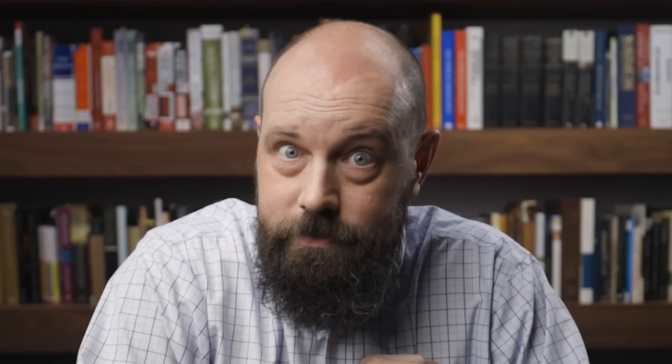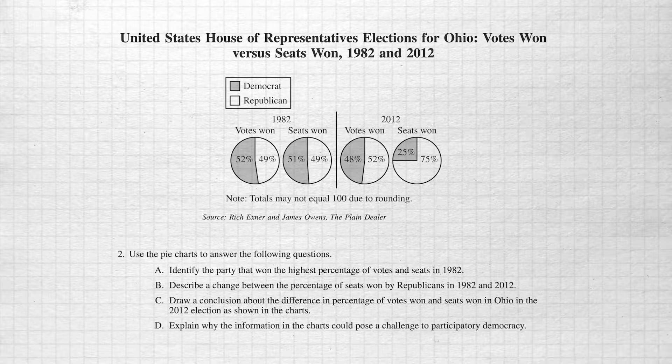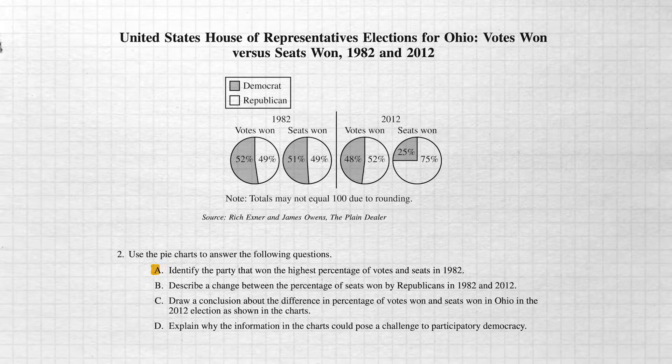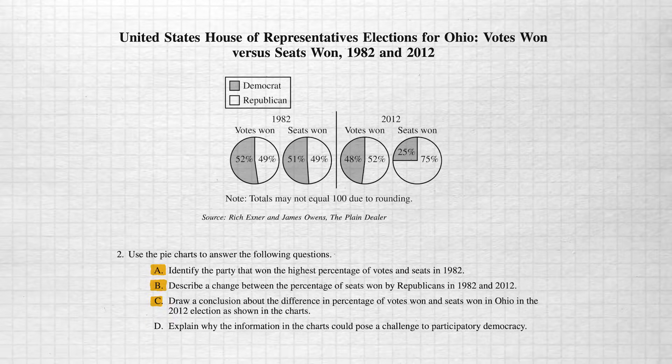So if you're the kind of person who tends to overthink things, then grab your brain by the shoulder, slap it in the face, and say stop it. After the stimulus, you'll see four parts to the question labeled A, B, C, and D.